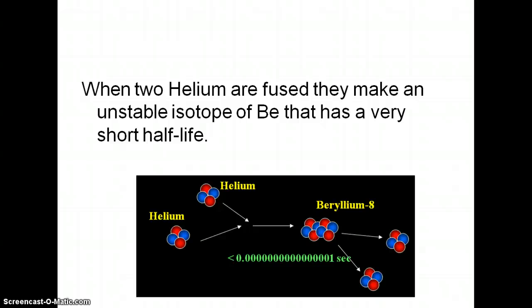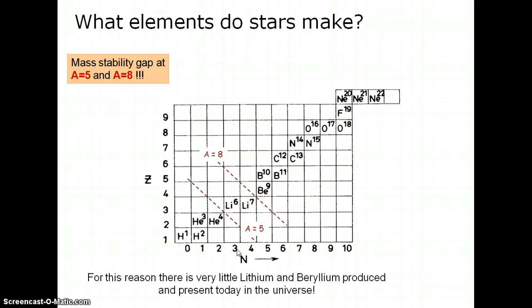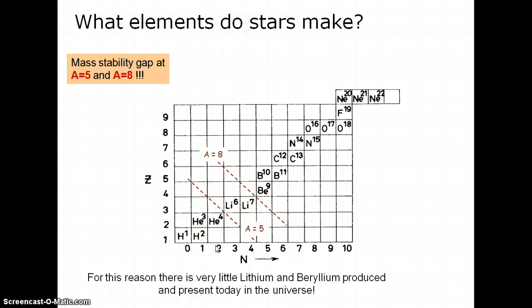When helium is fused, two heliums make beryllium-8, which is unstable — its half-life is super, super short, so it doesn't really stay around long. If you look at the chart, there's a big mass gap in what elements are made between atomic number 5 and atomic number 8. Atomic numbers 5 and 8 do not even rank on the chart of abundance because they are so very little produced and therefore very little present in the universe today.